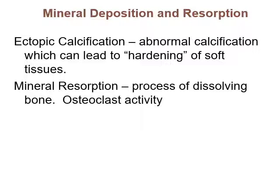Regarding mineral deposition and resorption: deposition means you're building bone matrix, and resorption means you're breaking it down. Ectopic calcification means calcification of tissues where it shouldn't be happening — for example, hardening of the arteries or calcium deposits forming in soft tissues like cartilage, making joints crack and crunch. This can happen with injuries and sometimes is part of normal aging.